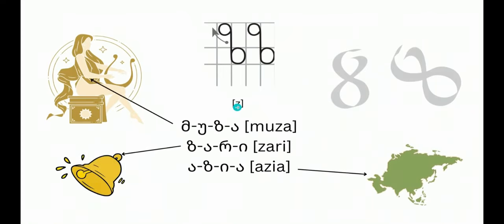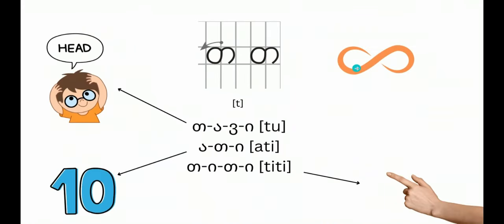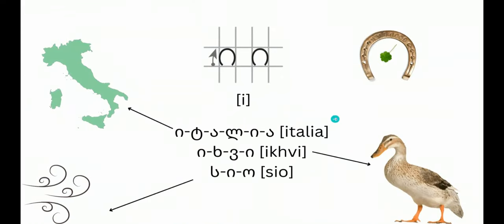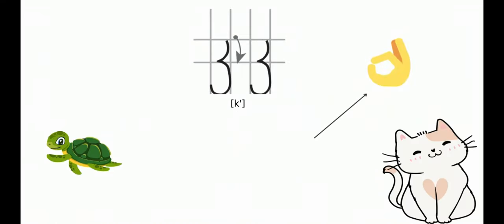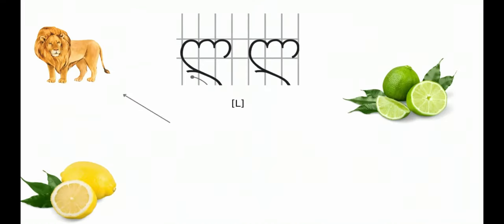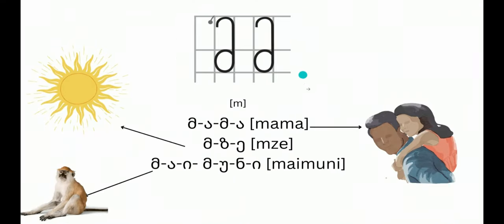V - vashli. I painted eight because it has the shape of eight. Z - muza, zari. T - Asia. T has the shape of the eternity symbol. I - tavi.